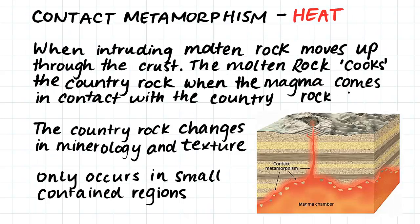As we know, metamorphism occurs due to either heat or pressure or a combination of the two. Contact metamorphism occurs purely because of heat. It occurs when intruding molten rock moves up through the crust, cooking the country rock — which is the surrounding rock — when the magma comes in contact with it. The country rock will change in mineralogy and texture, but this will only occur in small contained regions where the molten rock comes in contact with the country rock.